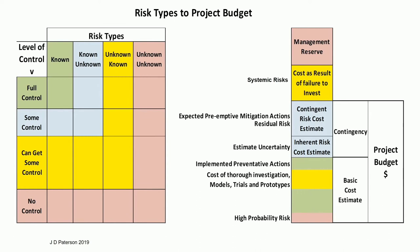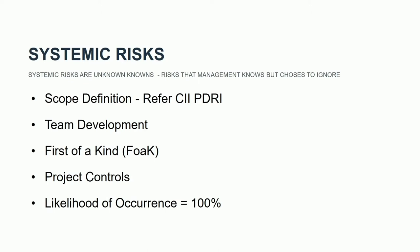Over here is the project budget: you've got a basic cost which includes work you can do by investigating models, trials and prototypes. Here are the contingencies — the inherent contingency due to quantities and rates of production, the contingent risk for events, and up here the systemic risks. These are risks that are a nature and culture of the organisation, made in four major areas: scope definition, team development, new technology, and project controls.